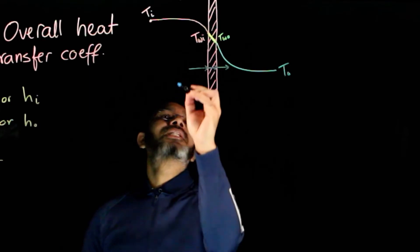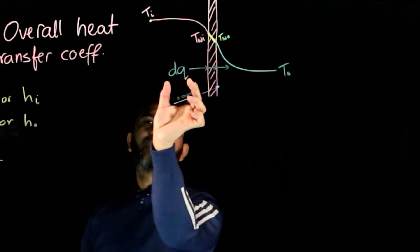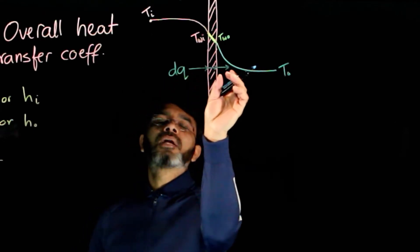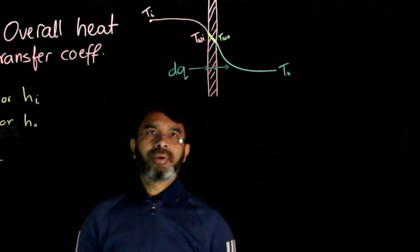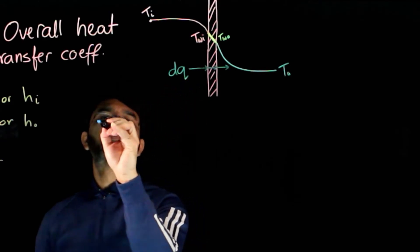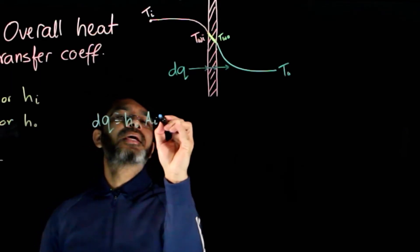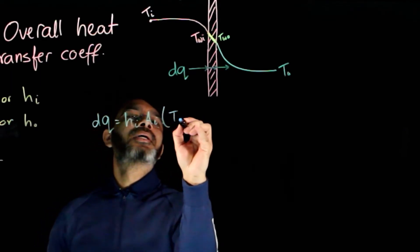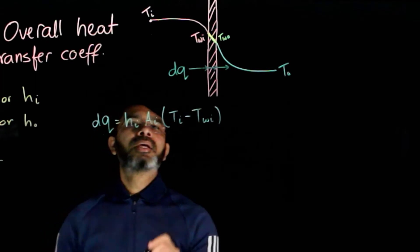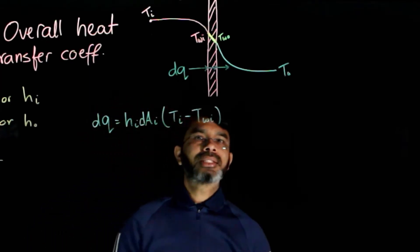For this differential element, if I take this to be dQ, I will have the same amount of heat going from the bulk of the fluid to the wall, through the wall to the other side, and then to the other fluid. We can define for each side: dQ equals H_I times dA_I times (T_I minus T_WI), where dA_I is the differential inside area.